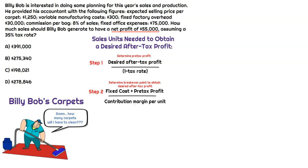We learned about the two steps. The first one is we've got to figure out what that pre-tax profit is. Then we add that along with the fixed cost together, and then we divide by contribution margin per unit. That will give us the amount of sales units, or carpets, that Bob needs to clean.